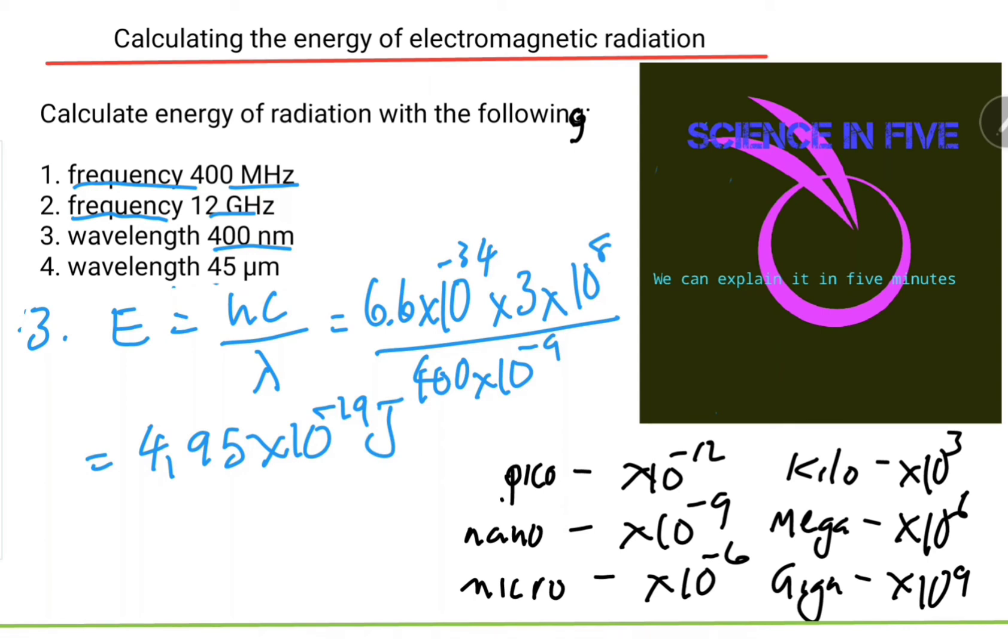So number three is done. Number four - again, since the only value that is changing is the wavelength and I've got limited space here, I'm going to put the wavelength value which is 45 micrometers. And I end up with 4.4 times 10 to the negative 21 joules.